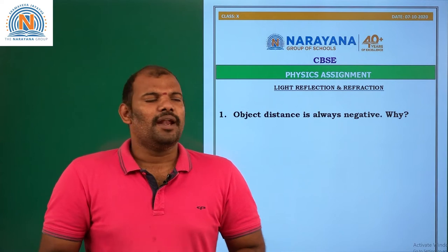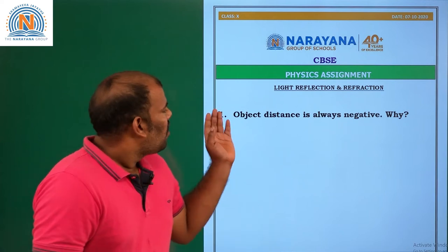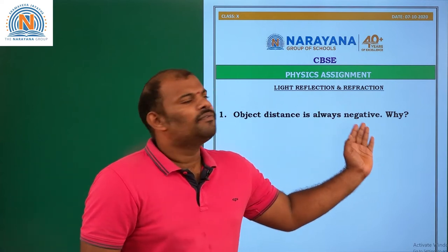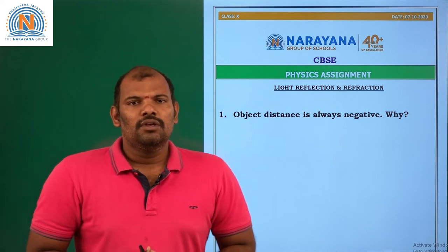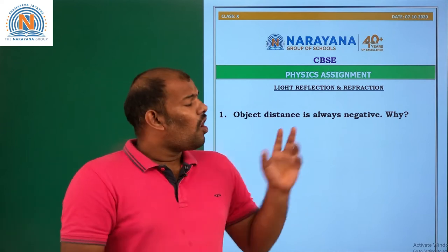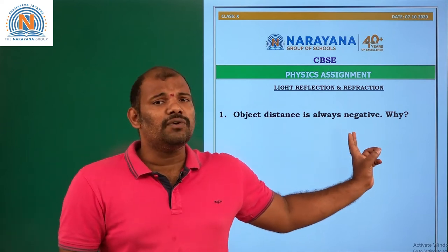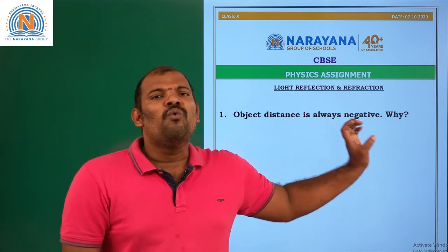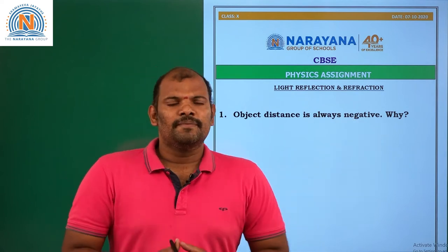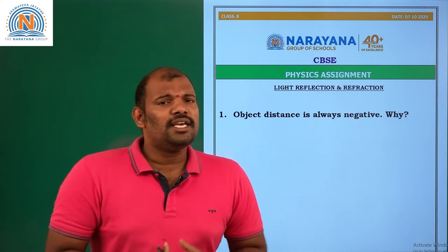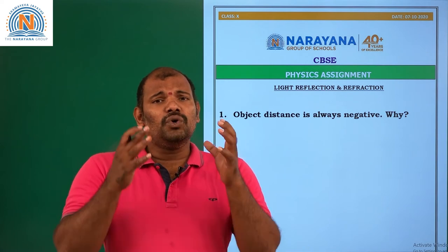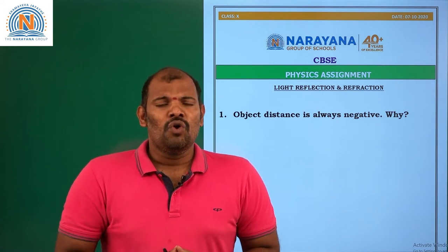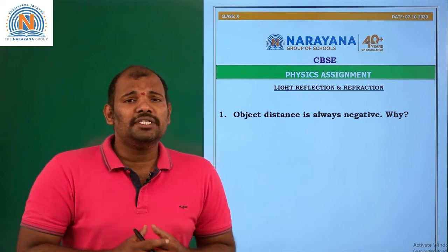Let us see question number 1: Object distance is always negative — why? So the statement is given that object distance is always negative, and we need to understand why. Before knowing this, you have to revise the sign convention topic. What is the first point in sign convention?